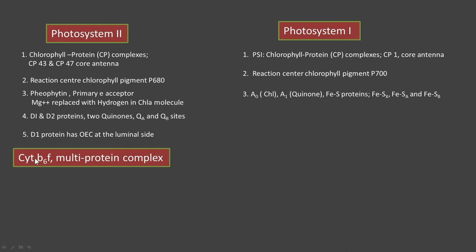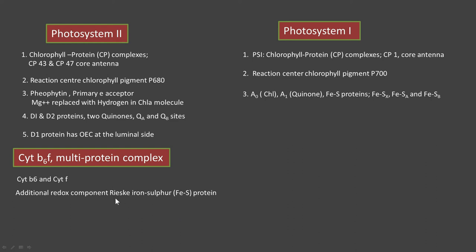Another important multi-protein complex is cytochrome b6f, which is composed of cytochrome b6 and cytochrome f. It has an additional redox component — the iron-sulfur protein discovered by Rieske, known as the Rieske iron-sulfur protein. These three complexes — PS2, PS1, and cytochrome b6f — are static: they are embedded completely in the thylakoid membrane and cannot change their position.